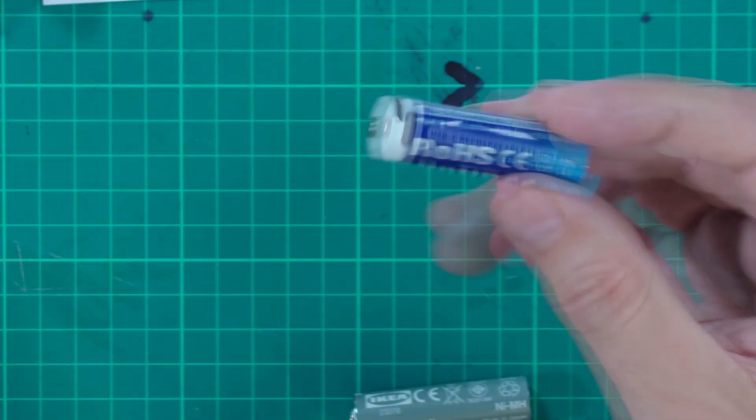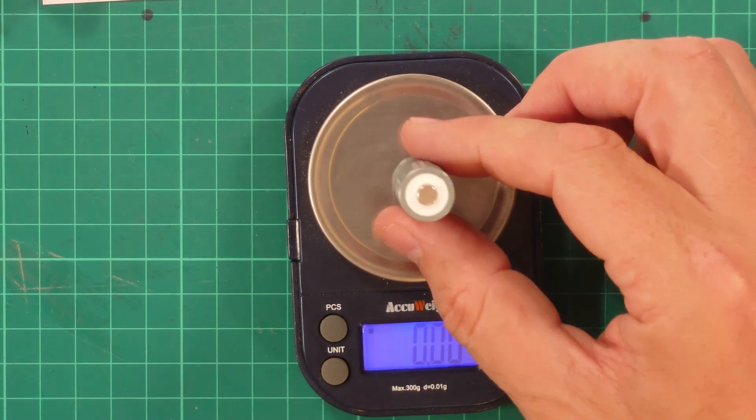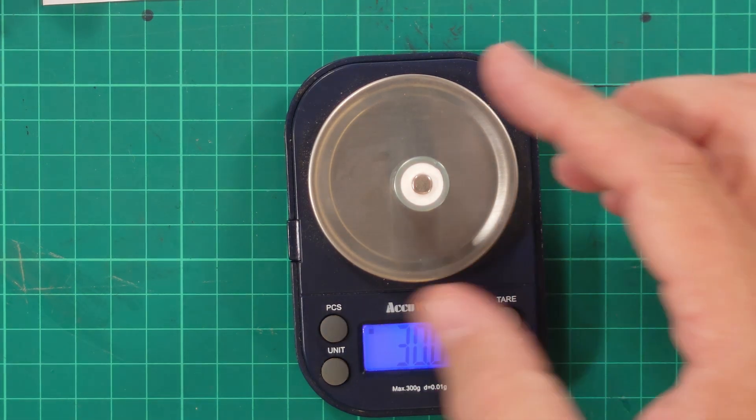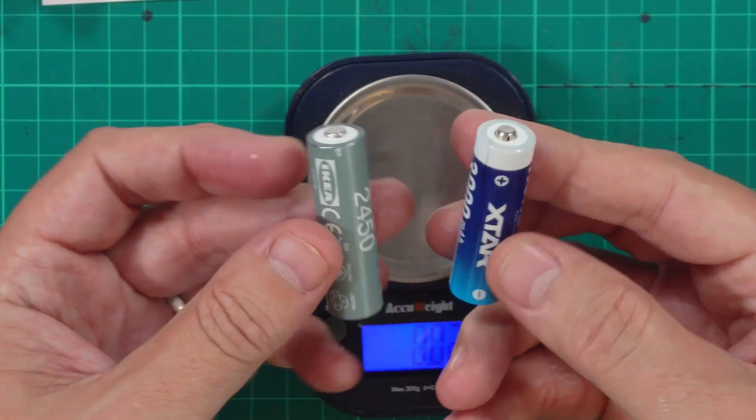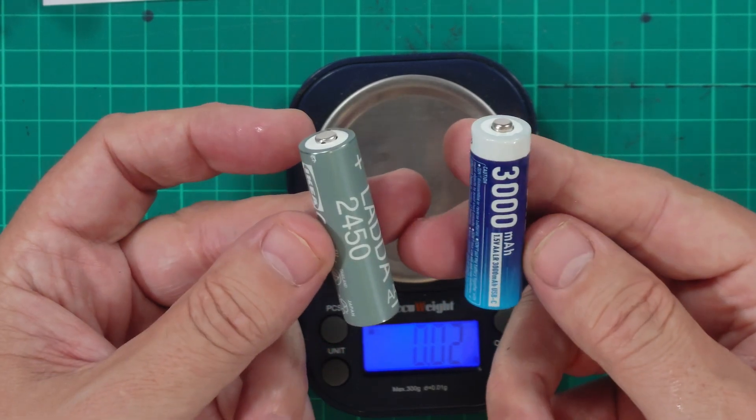You know what I want to do now? I want to weigh it. Here's my scales. Turn it on. Here's the ladders. 30 grams. And the other ones? 21.05. So they're lighter. Obviously, lithium is only the third element on the periodic table. So it's a light battery. But that doesn't mean it's got less power inside it. It's not generally a weight thing with lithium.